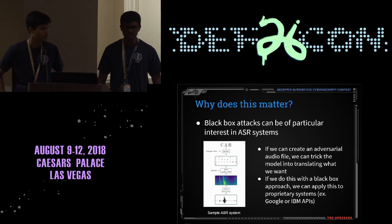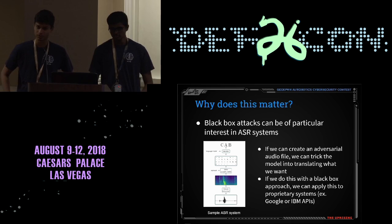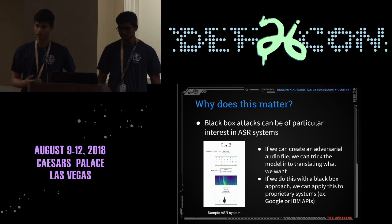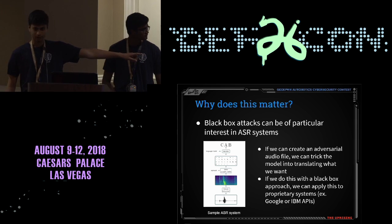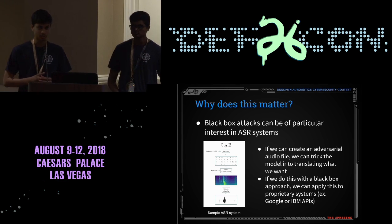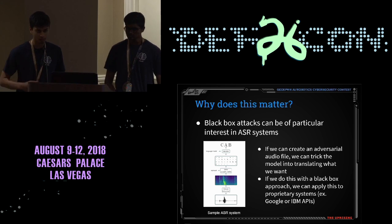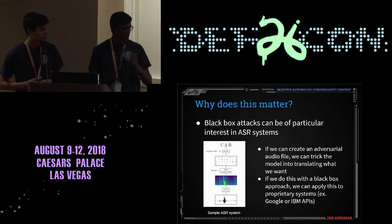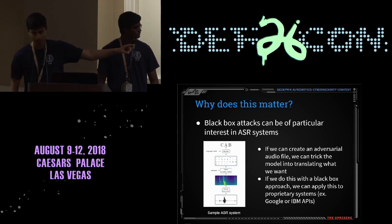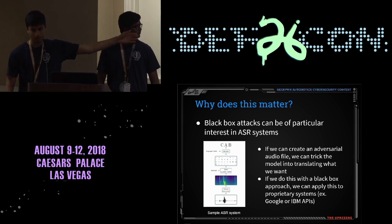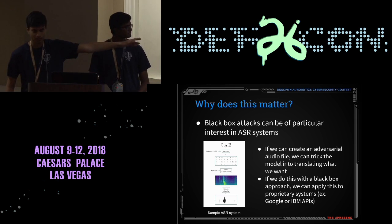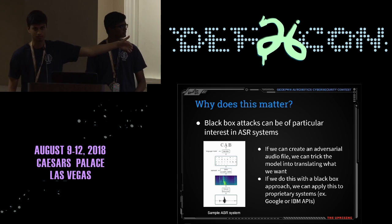Many of you might be asking why this matters. Black box attacks can be of particular interest in ASR systems — automatic speech recognition. In a typical deep model for an ASR system, at the bottom we have the raw audio WAV file. The models use some feature extraction, typically an MFCC conversion, which takes the audio file and converts it using a Fourier transform into the frequency domain. The colored graph shows frequency on the y-axis and time on the x-axis. This graph is passed into the model, which uses convolutional and recurrent layers to get a distribution over the output alphabet.